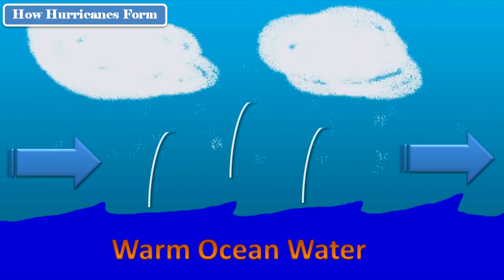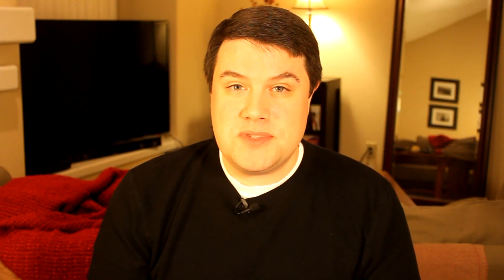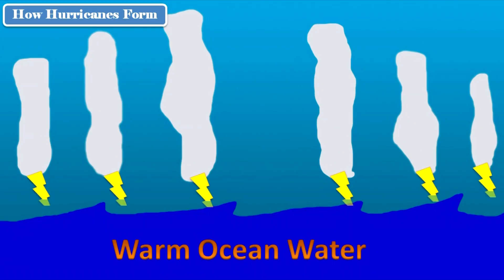That forms clouds. This process of evaporating and creating clouds can continue for several days, and every time the process repeats itself, it creates more and more clouds. Eventually, all of those clouds cluster together and form thunderstorms. As the storms develop and get stronger, they create even more rising air, and all of that air moving up from the surface creates an area of low pressure.